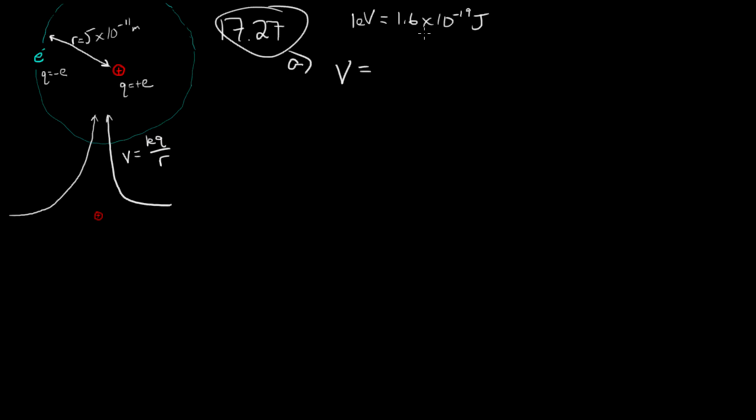So the potential is equal to k times e, the charge on an electron, divided by the distance. Alright, k is 9 times 10 to the 9th newton meters squared per coulomb squared. E is 1.6 times 10 to the minus 19 coulombs. And I divide by this r distance, which is 5 times 10 to the minus 11 meters. First thing to do will be to take care of units. One of the coulombs cancels along with one of the meters.